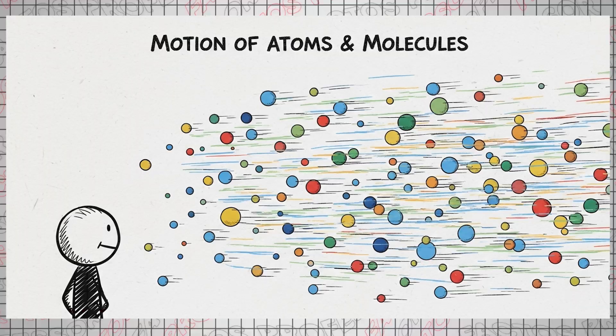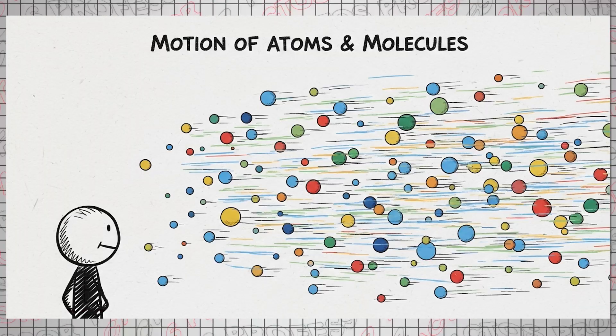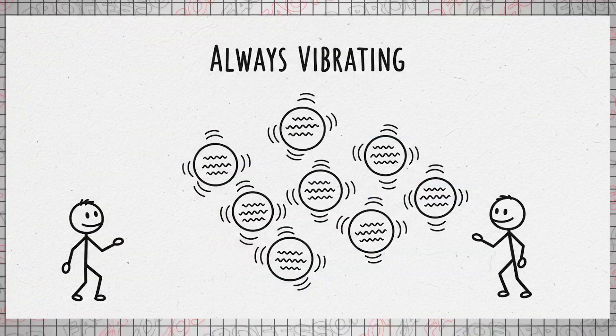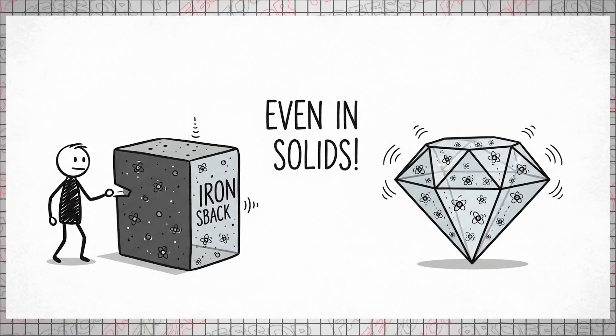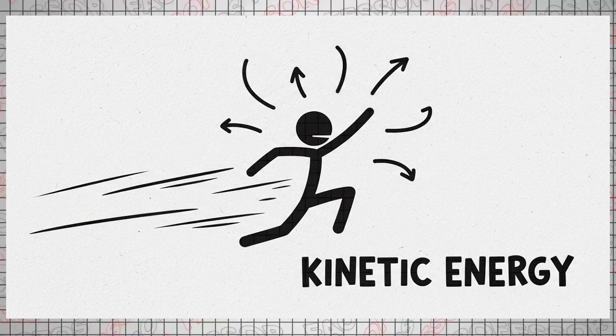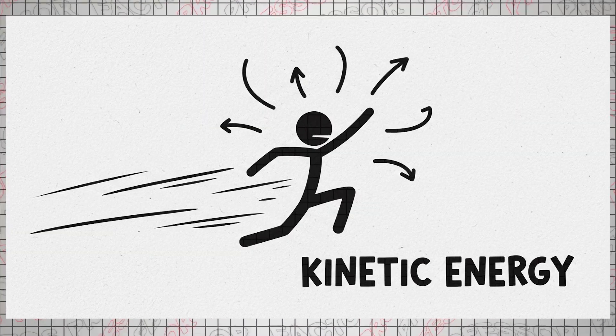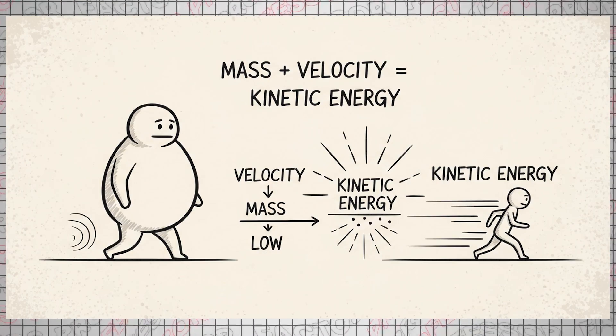So why do they have different temperatures? The core of temperature lies in the motion of atoms and molecules. Every atom and molecule is constantly vibrating, even those within a solid iron block or a diamond. As you might recall, anything in motion possesses energy, known as kinetic energy.